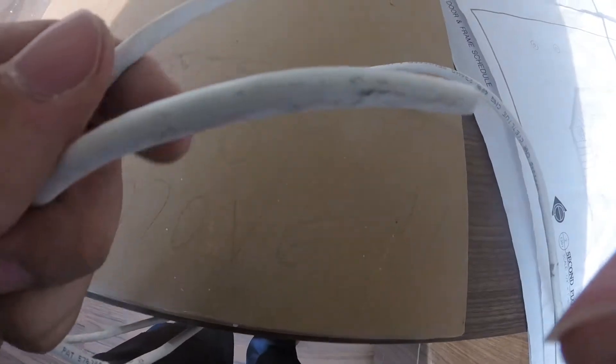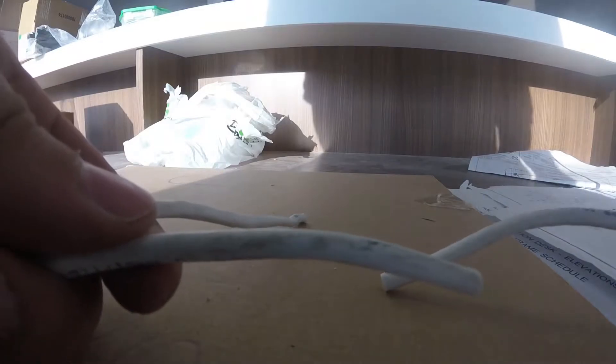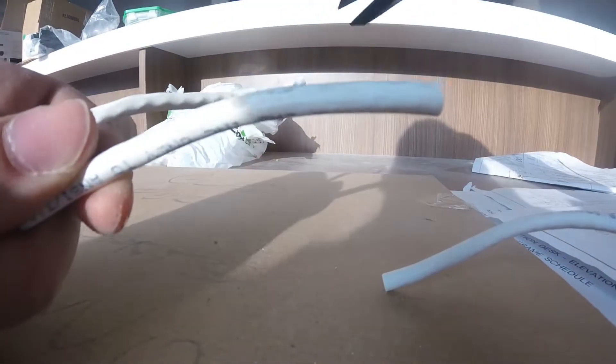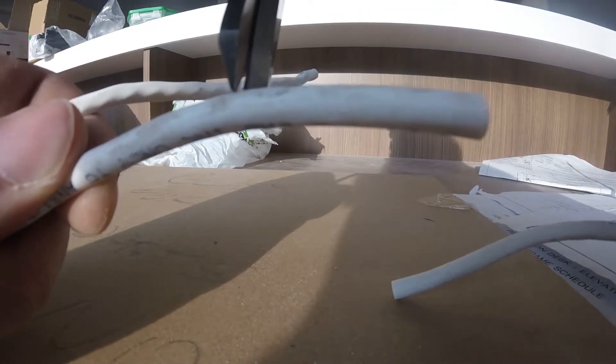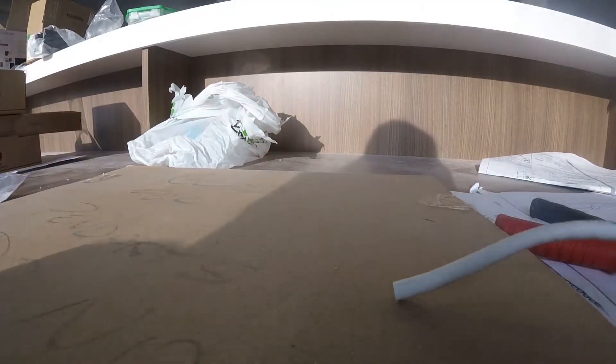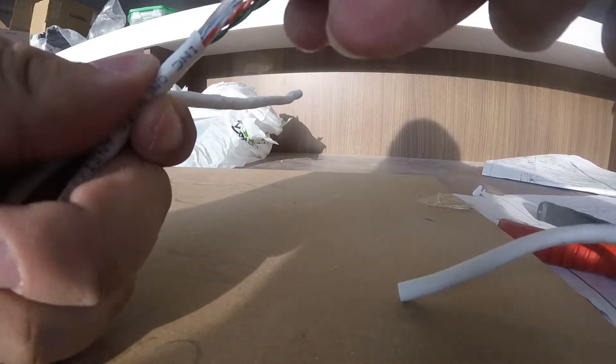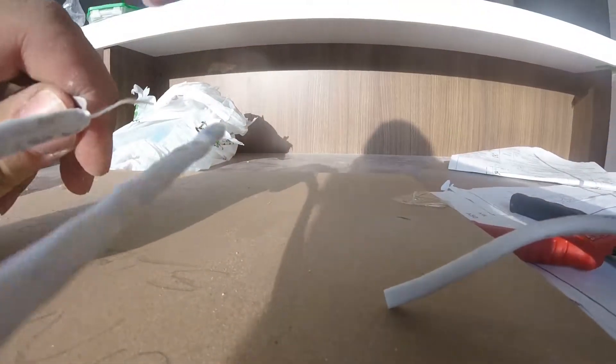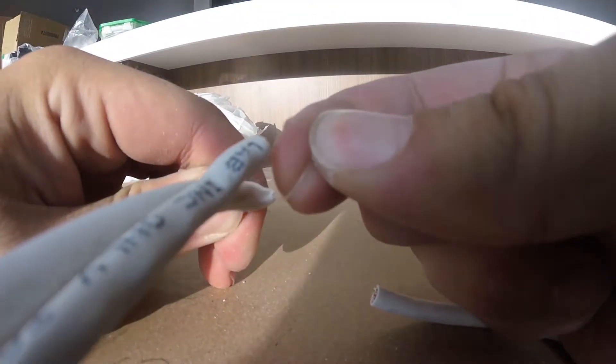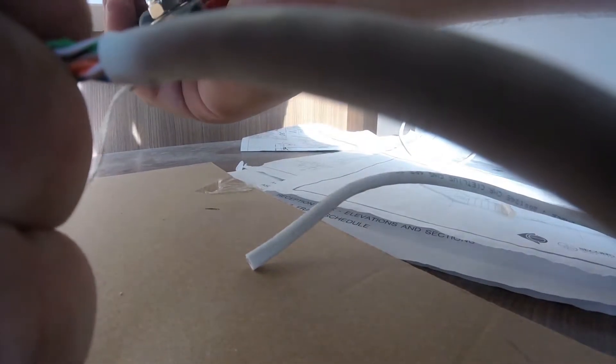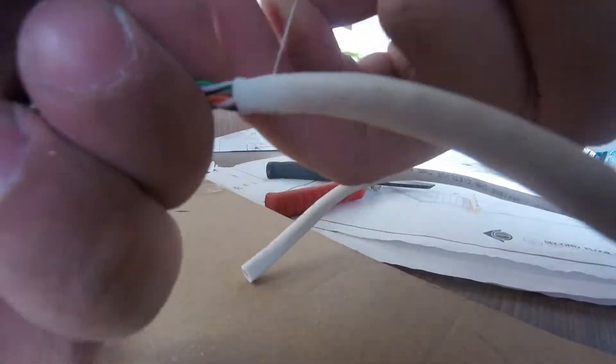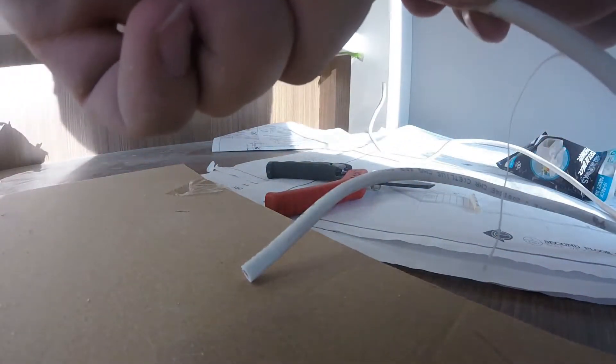What I did was I toned out each line to figure out where it's going. Then we terminated each Cat6 line as a single data drop to a Cat6 jack, and I terminated each Cat5e line onto two phone jacks. So each phone jack can support two phone lines with two pairs each. One pair per phone line but two pairs per phone jack. That allows us to have four phone lines at each wall plate and one ethernet port at each wall plate.